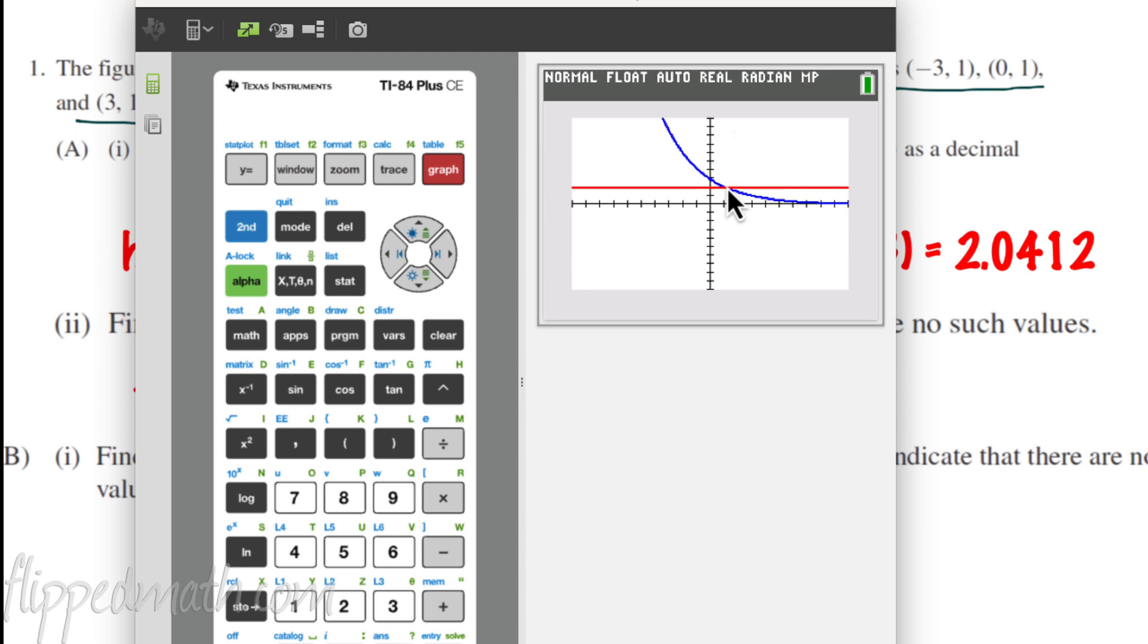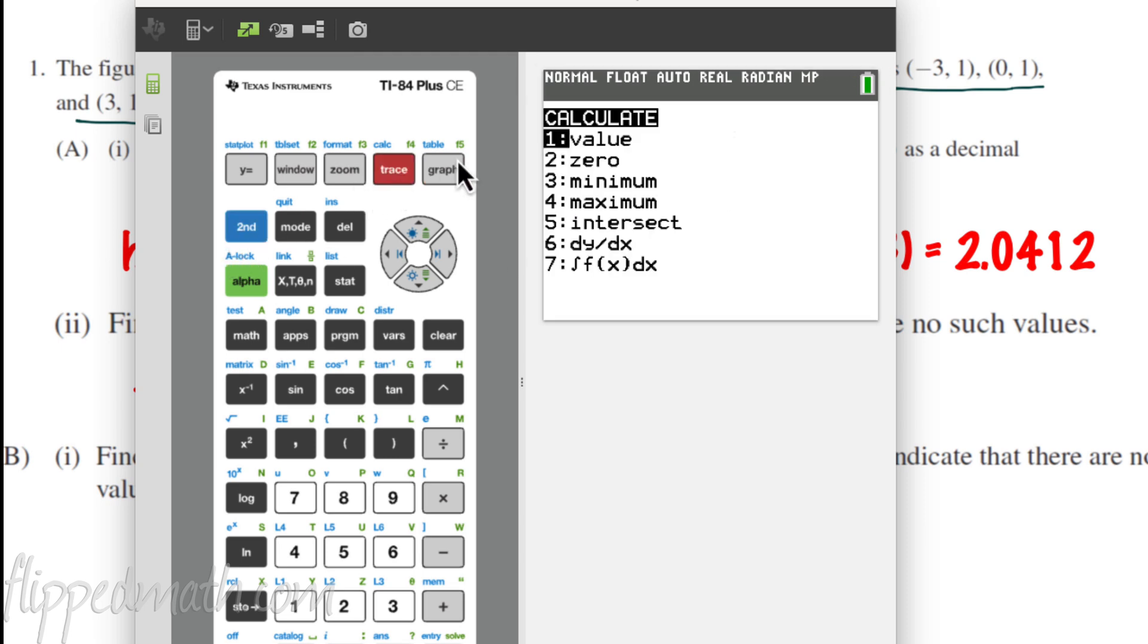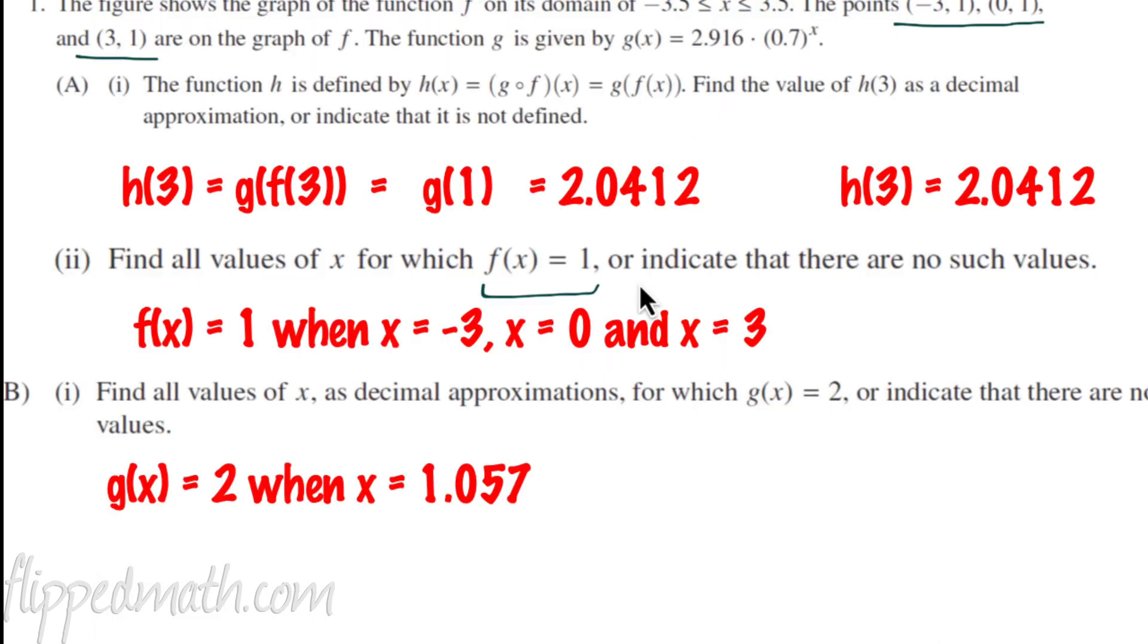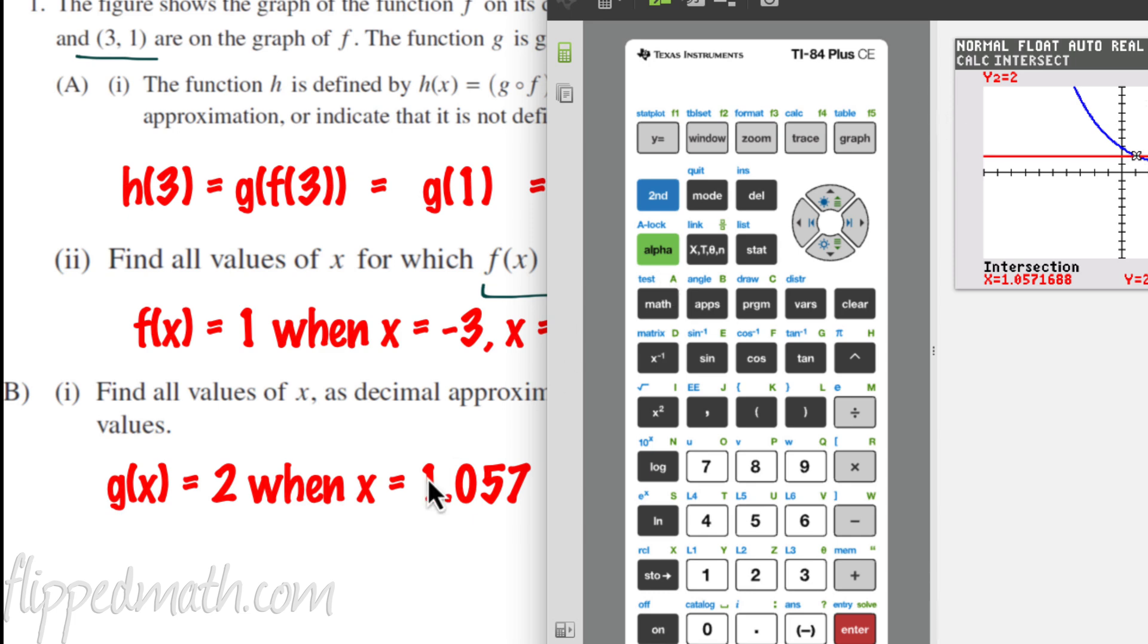I'll check the graph out. And I notice that there's an intersection right here. That's 2nd. Calculate the intersect. Choice 5. So you have to enter 3 times. And you'll get an intersection right here of 1.057. And so I will write that out. And I'm assuming you know you have to go out 3 places, right? So go out 3 places. You can truncate or you can round it. I just truncate it. Just go out 3 places and stop. That's probably the safest idea.